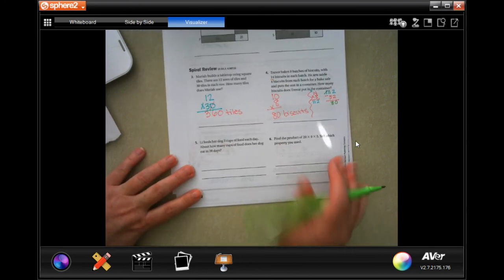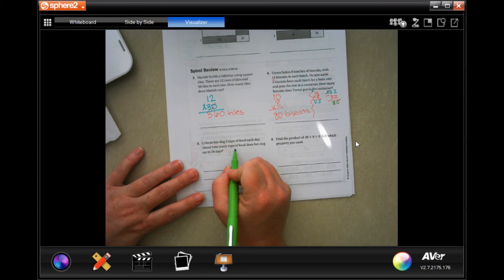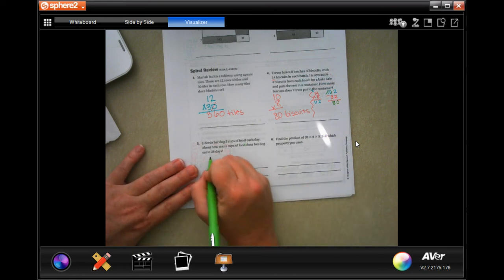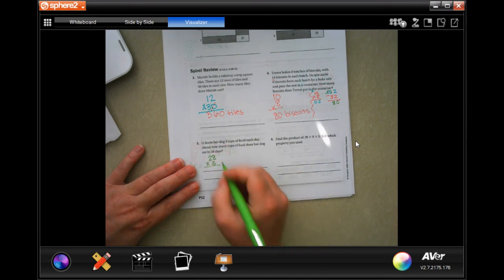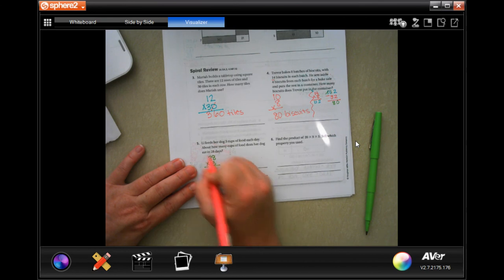So, you can do it both ways. It's just easier for me if I just take 4 biscuits off of each of those 14 and multiply it by 10. All right. We feed their dogs 3 cups of food each day. About how many cups of food does she feed her dog eat in 28 days? So, just 28. We're going to multiply it by 3. All right. 3 times 8 is 24. 3 times 2 is 6. Plus 2 more, 84 cups. There we go.